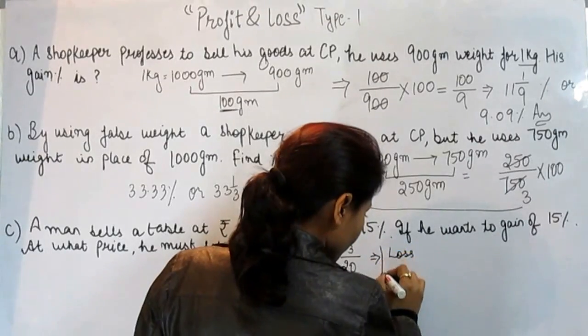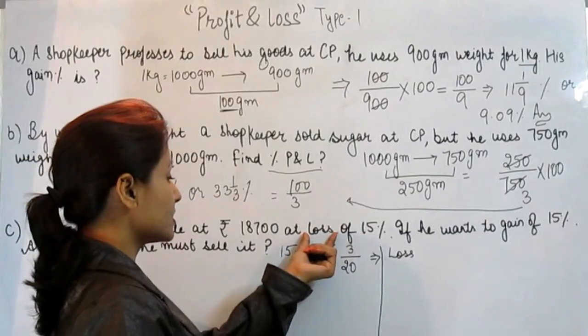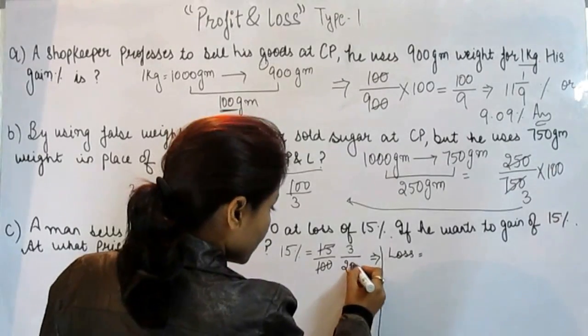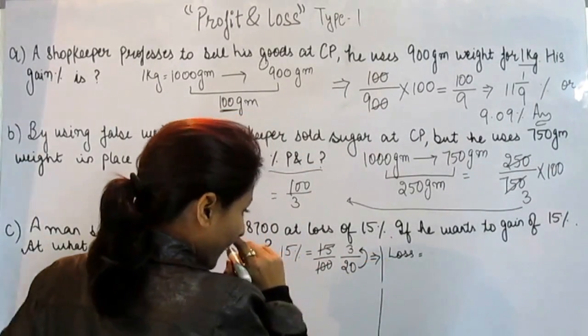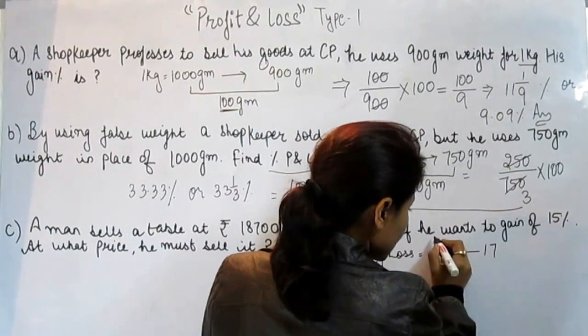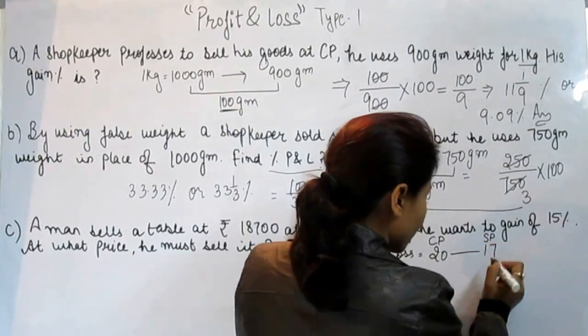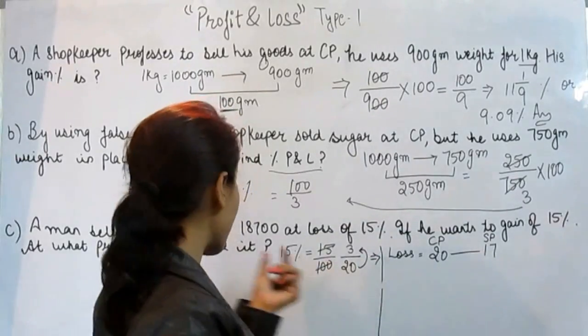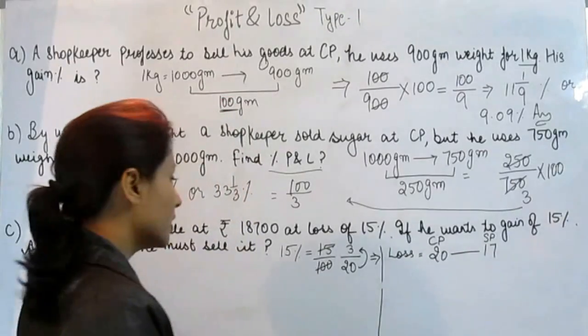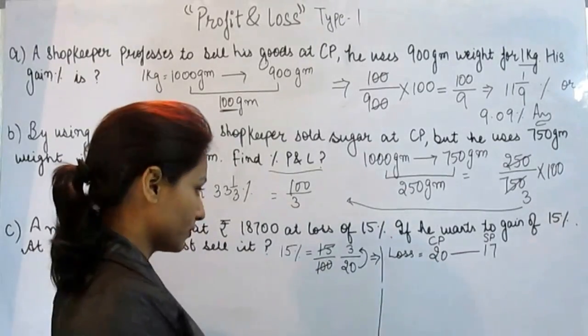It means, first of all he gets loss of 15%. His CP was 20 but the selling price was 17 only. He purchased that table at rupees 20 and he sold that table with loss of 15%, for rupees 17 only.